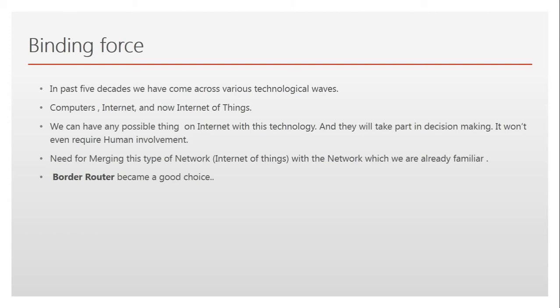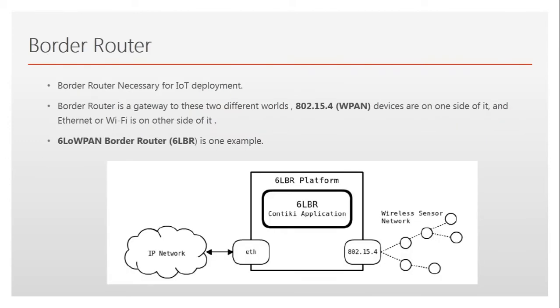So when we have these two types of internet — on one side we have an internet where people are involved, and on the other side we have an internet where things are involved — how do we connect them? In that case a border router becomes a binding force, and a border router is the better choice. One such kind of border router is the 6LoWPAN Border Router.